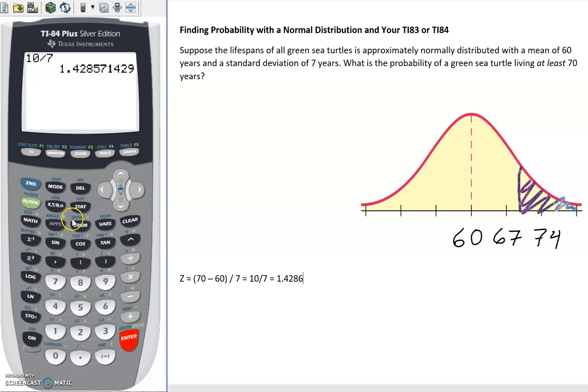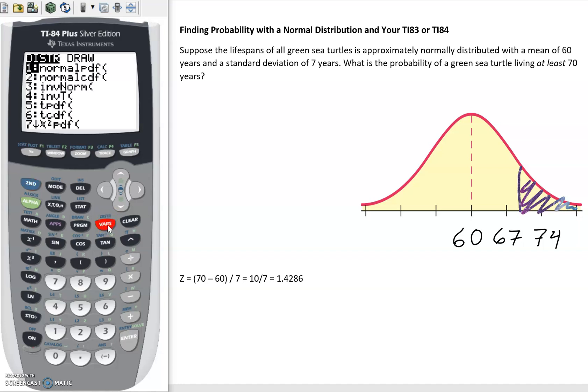The other thing we can do though with that z-score or without is we can use our calculator. Our calculator knows this distribution, has been programmed for it. If we click on second and then go to vars variables, above that we see distribution. We're dealing with a normal distribution and sure enough one of the first things that might jump out to us is normal pdf, normal cdf. We actually want the second one, normal cdf.